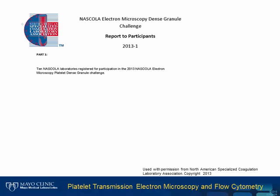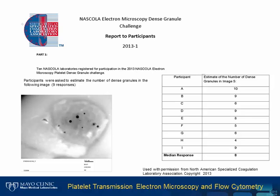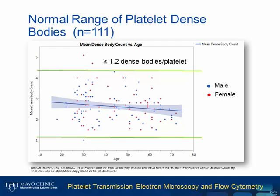We provided these criteria to all nine participants of the NASCOLA electron microscopy dense granule interpretation challenge. Each laboratory was asked to count the number of dense granules in the provided images, and we observed very good agreement among different laboratories. After establishing the dense granule counting criteria, we studied the normal range of mean dense granule count per platelet, enrolling 111 healthy donors with balanced gender and counting at least 100 platelets per donor sample. The lower normal cutoff is 1.2 dense granules per platelet, and we found that dense granule count was not associated with age or gender.